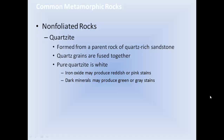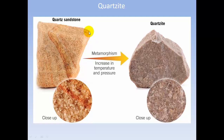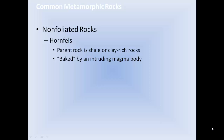Quartzite is formed from a parent rock of quartz-rich sandstone. The quartz grains are fused together. Pure quartzite is white; iron oxide may produce reddish or pink stains, and dark minerals may produce green or gray stains. Instead of individual sand grains, they recrystallize to form interlocking crystals. Hornfels: the parent rock is shale or clay-rich rocks, baked by an intruding magma body.